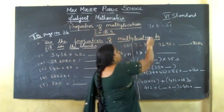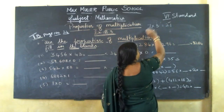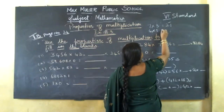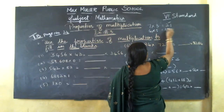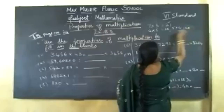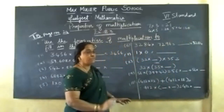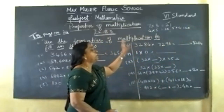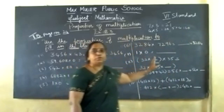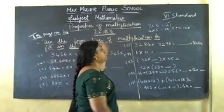Commutative property: if you change the order, for example, 4 fives are 20, 5 fours are also 20. If you change the order, it won't affect the result. You will get the same result. That is commutative property of multiplication.